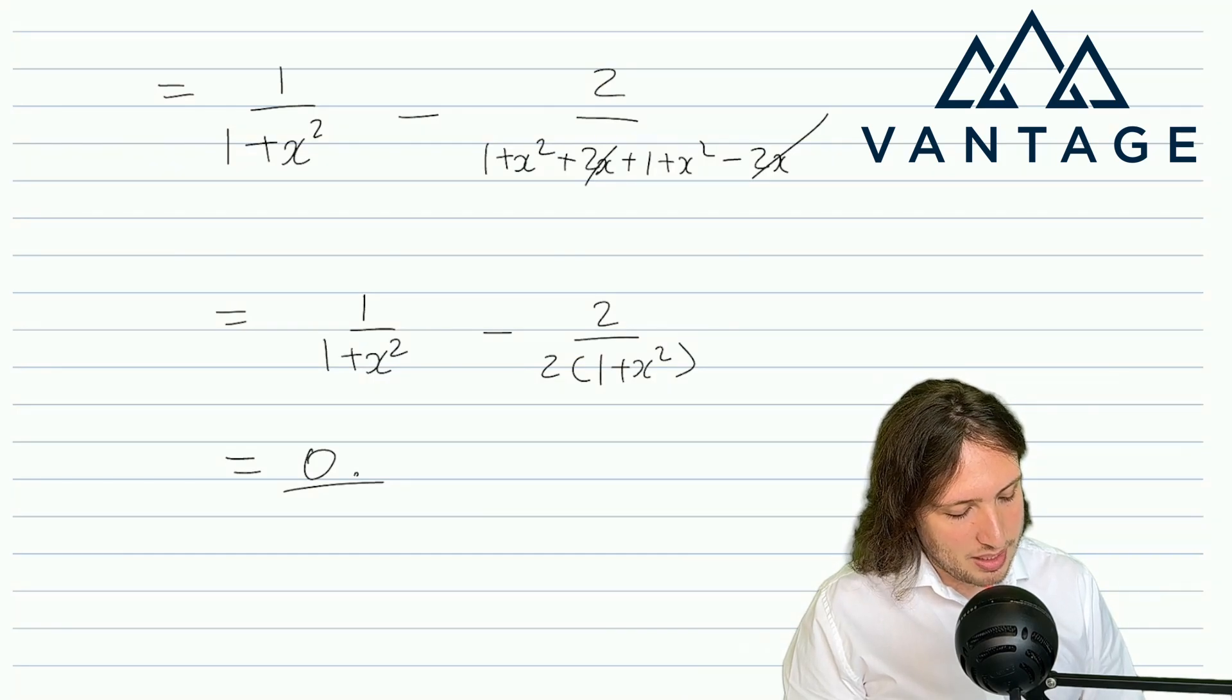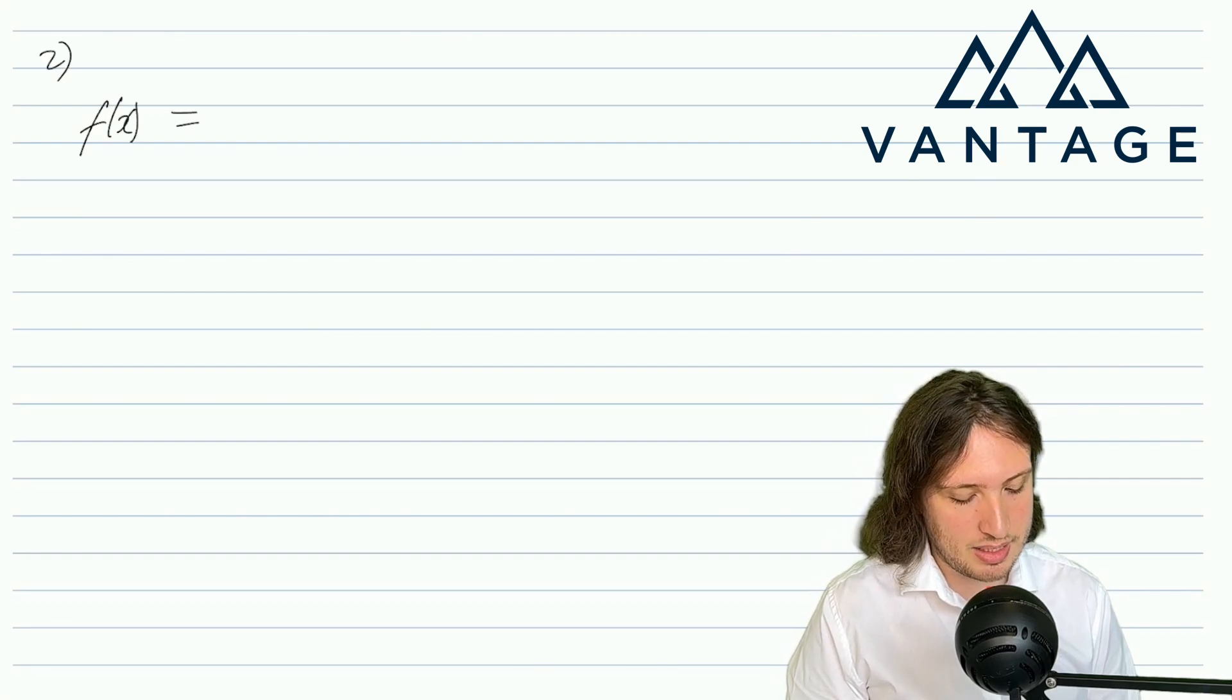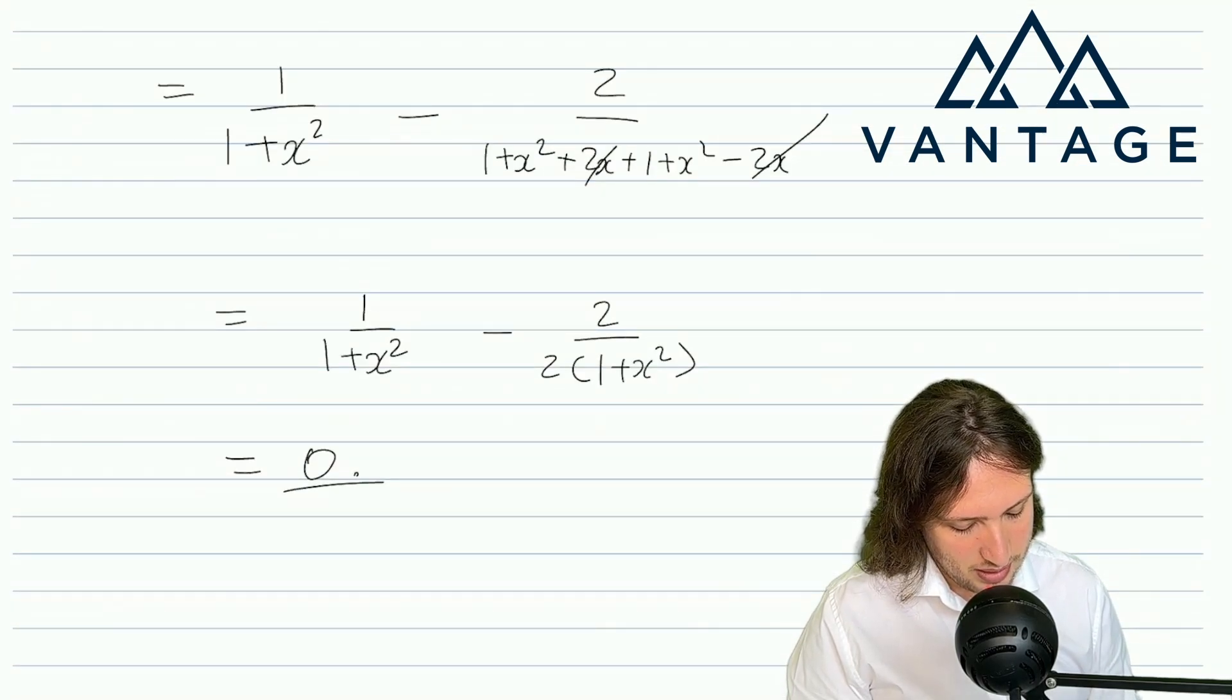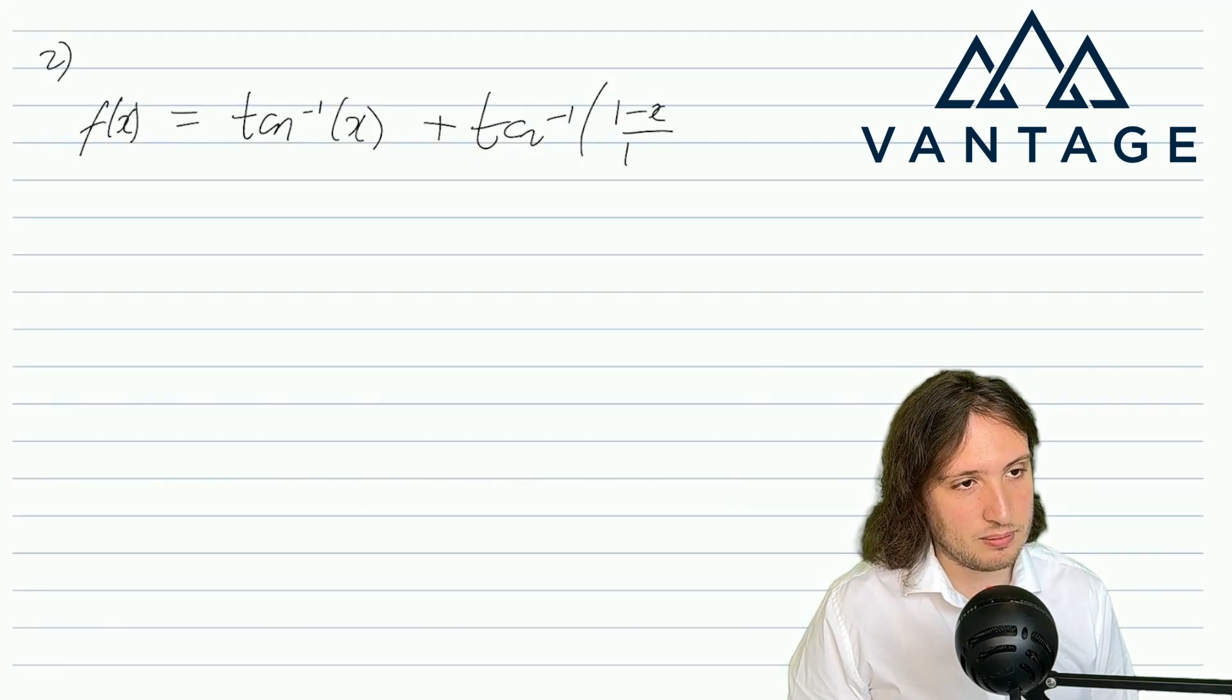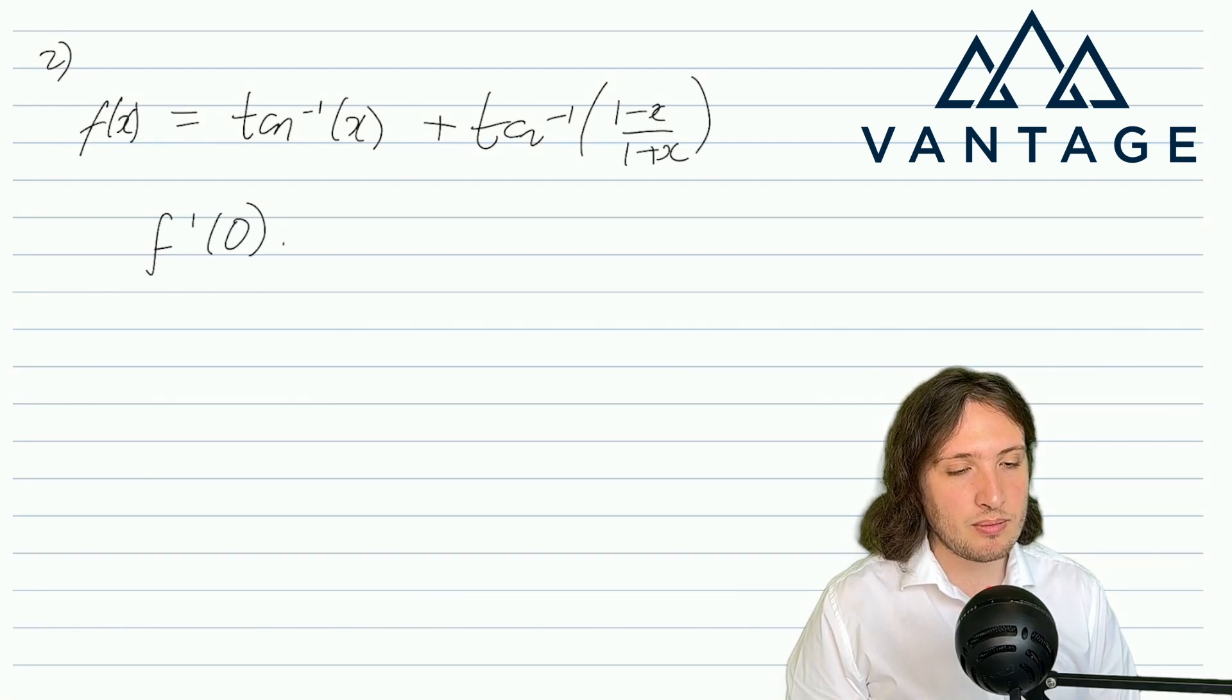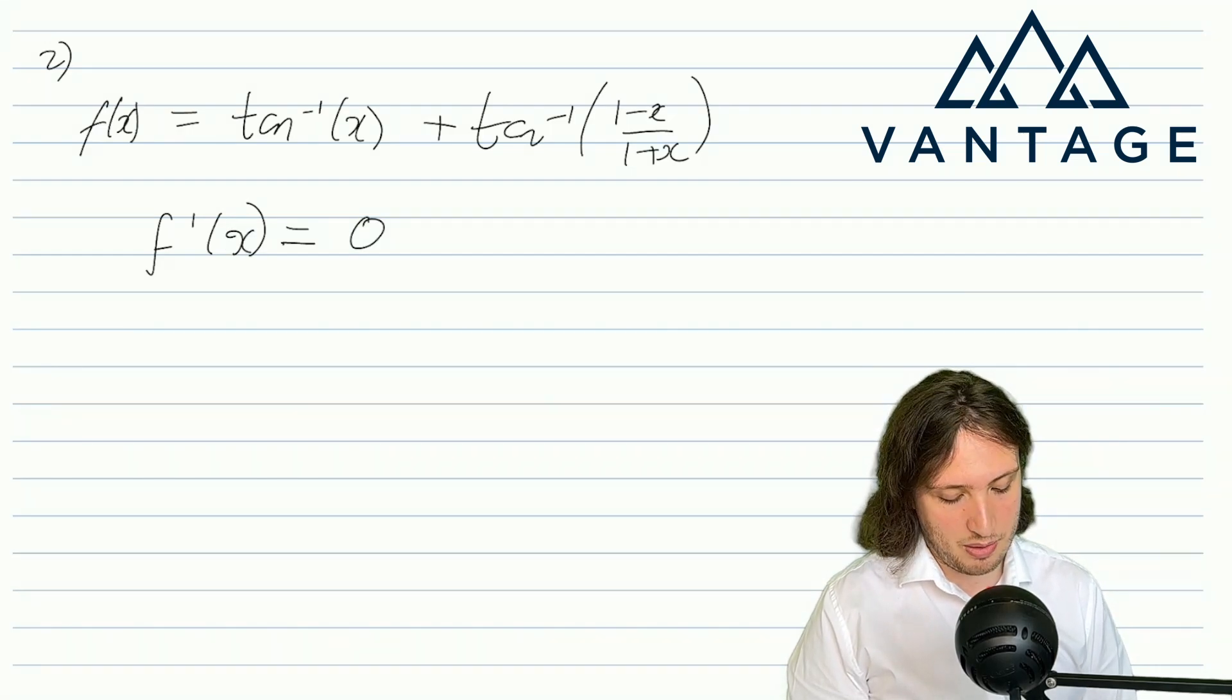So now here comes that interesting payoff. So we now want to obtain a simplified expression for f(x). So presumably we can use the fact that we know it's got this really simple derivative. So let's recall what f(x) was. It was arctan(x) + arctan((1-x)/(1+x)). And we know that this thing differentiates to zero.